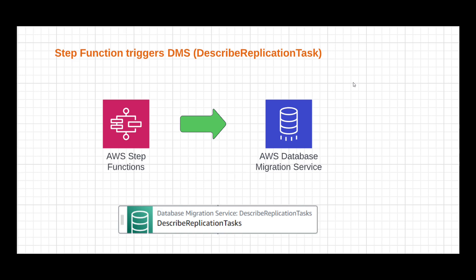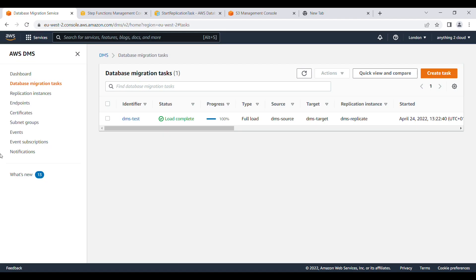Hello everyone. In this video we will see how we can trigger a DMS task from Step Functions. I have used the describe replication task capability, which is mainly to find the status of a DMS task. If you want to know the status of a particular running DMS task, you can use this describe replication task — it gives you the current status of the task.